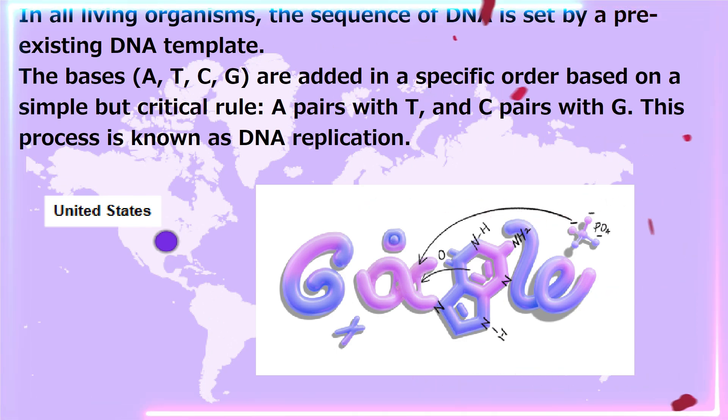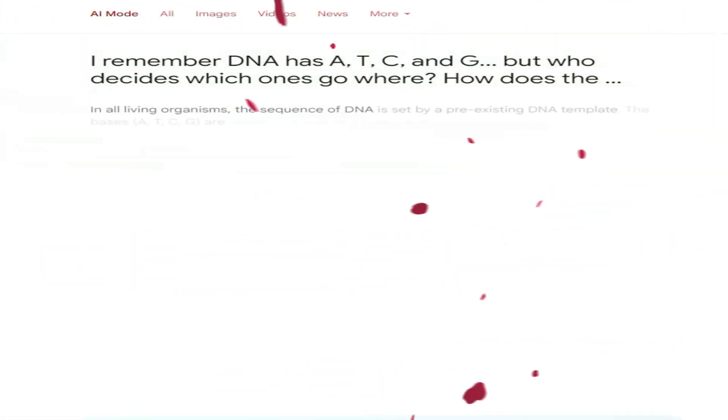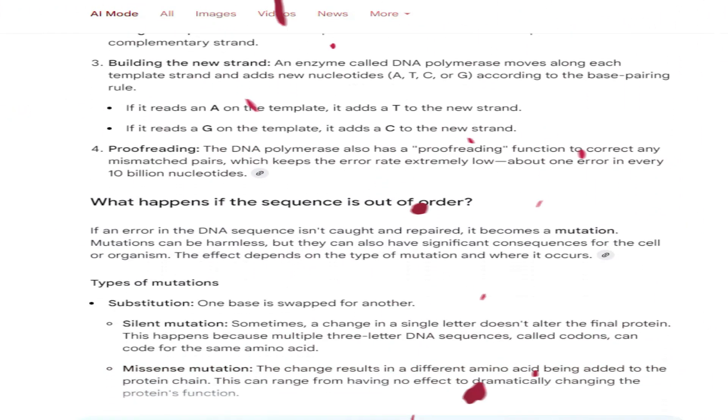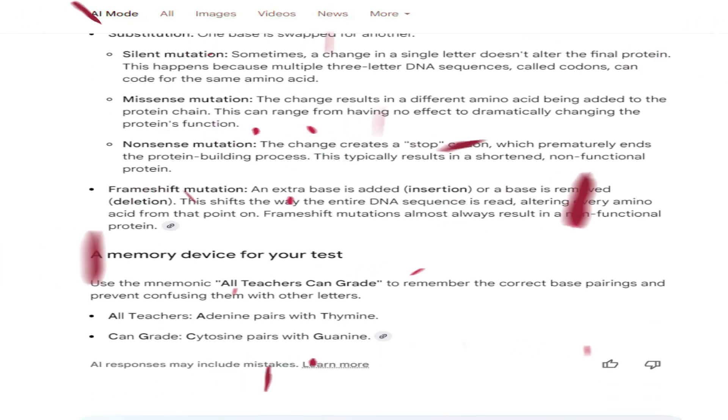AI mode in Google search answers about I remember DNA has A, T, C, and G, but who decides which ones go where? How does the sequence get set, and what happens if something goes out of order? What's a memory device I can use on an upcoming test?